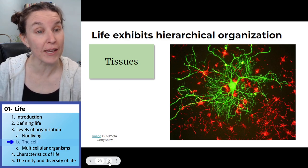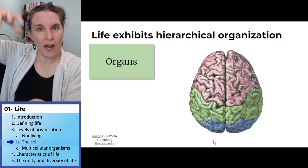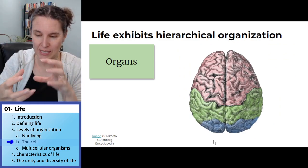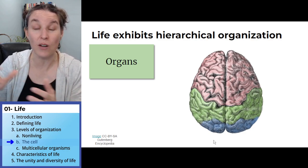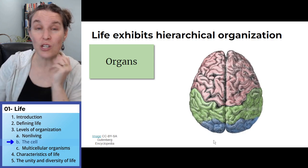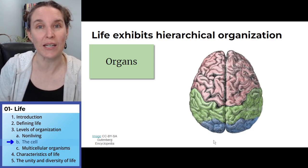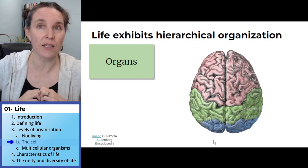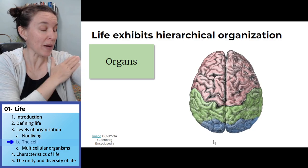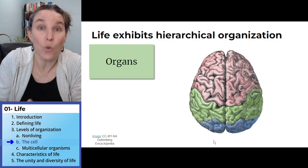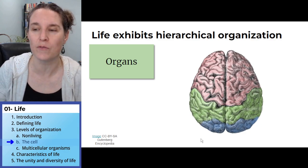Tissues can combine to form organs. If you zoomed out of that last picture, you'd see all those different kinds of cells working together — and you'd end up with the brain, which is an example of an organ. The heart is an organ. Muscle organs, like your biceps brachii, are organs — a whole bunch of different kinds of tissues working together for a common function.